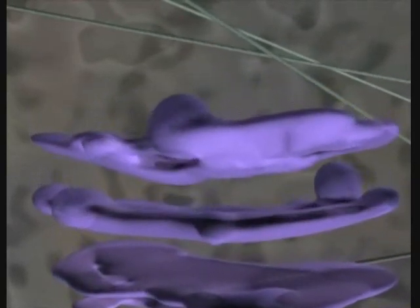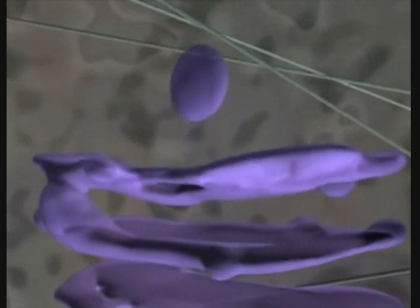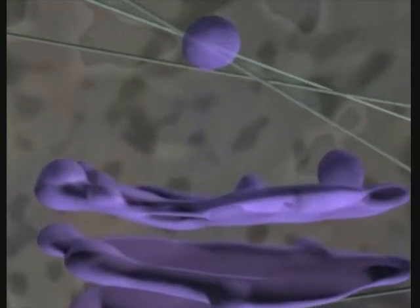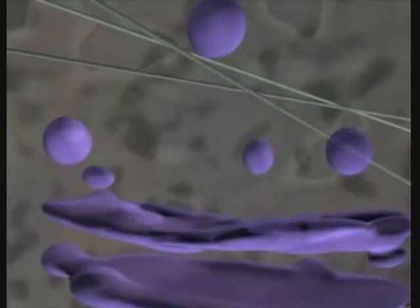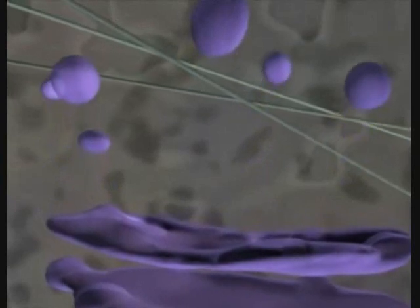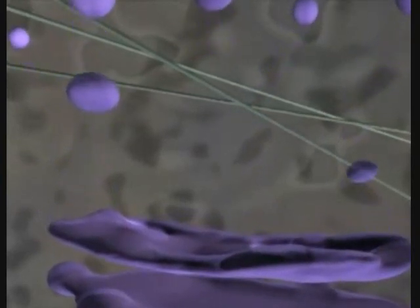One of the first organelles to be discovered because of its large size, the Golgi apparatus, composed of membrane sacs, is the UPS of the eukaryotic cell. It processes and packages macromolecules such as lipids and proteins, and ships them throughout the cell using vesicles.